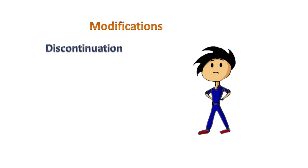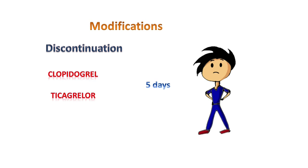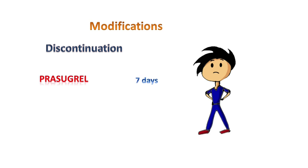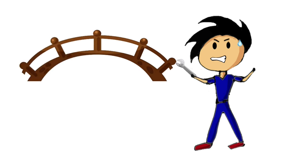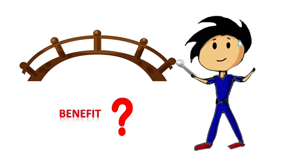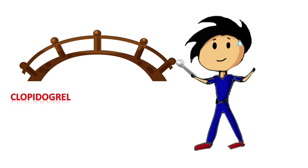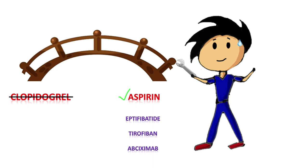Regarding discontinuation: aspirin is not usually discontinued, but in certain high-risk surgeries like intracranial neurosurgery, aspirin can be stopped 3–5 days prior. Clopidogrel and ticagrelor should be stopped 5 days prior, and prasugrel for 7 days. In dual antiplatelet therapy, sometimes clopidogrel is stopped 5 days before and aspirin continued. Then comes the controversy of bridging. In antiplatelets, the benefit of bridging is somewhat unclear, with some studies showing positive outcomes while others do not. Some protocols recommend stopping clopidogrel 5 days prior and administering aspirin instead, or using intravenous GP inhibitors instead of dual antiplatelets.